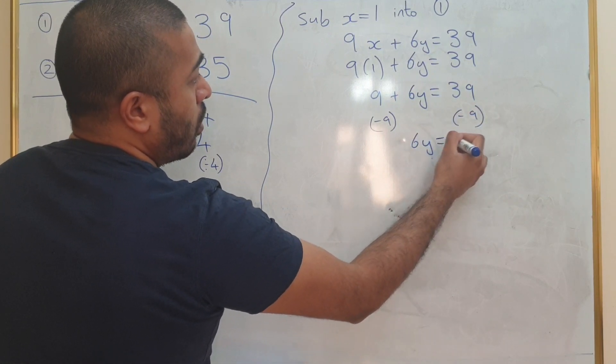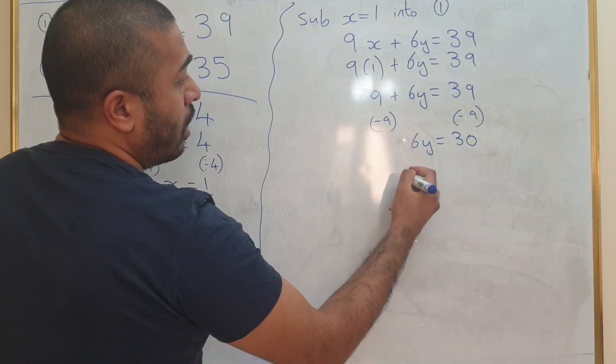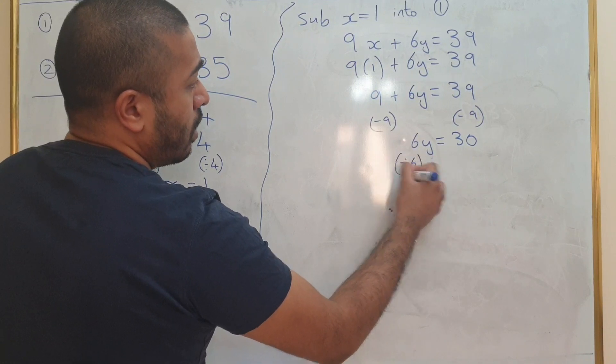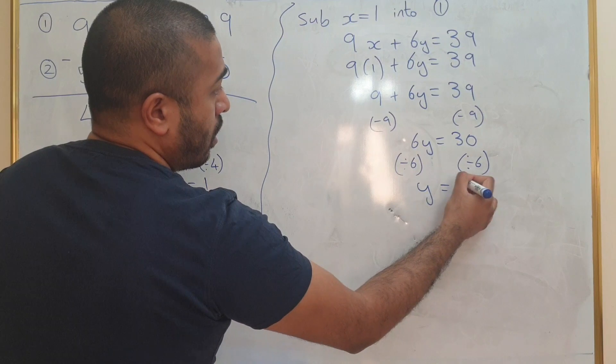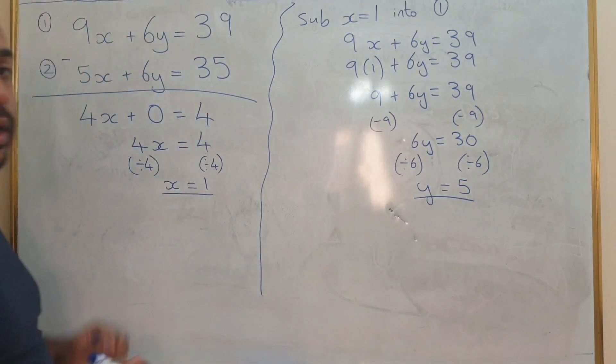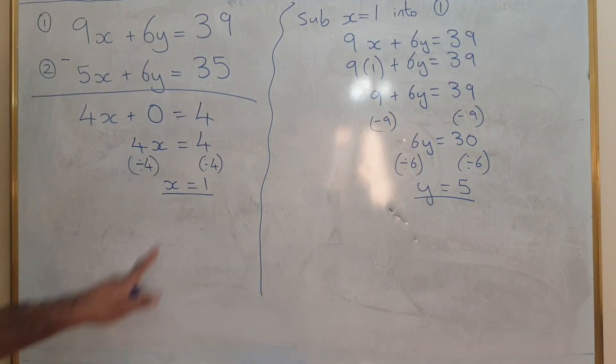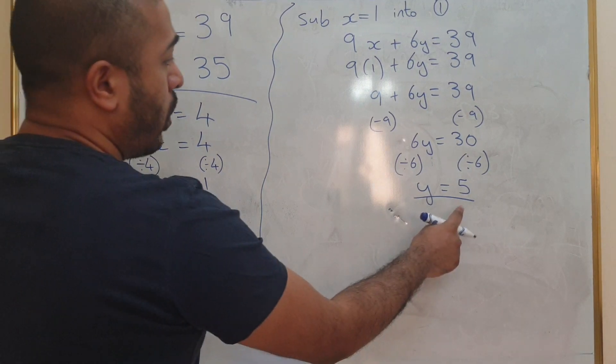So you get 6y equals 30 divided by 6 and y equals 5. Now you have an answer of x equals 1 and y equals 5.